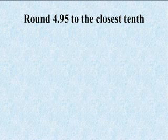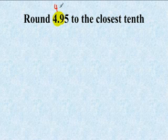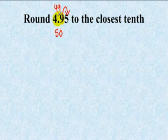Round 4.95 to the closest tenth. Because that's a nine, we need to look at the next number beside it — will it stay 49 or change to 50? Our five makes the 49 change to 50, so it becomes 5.0. Don't forget to put your decimal point back.